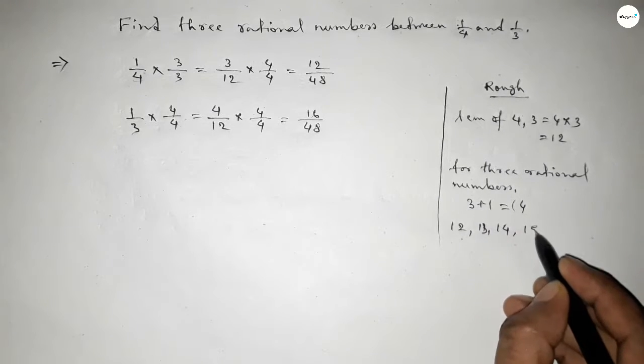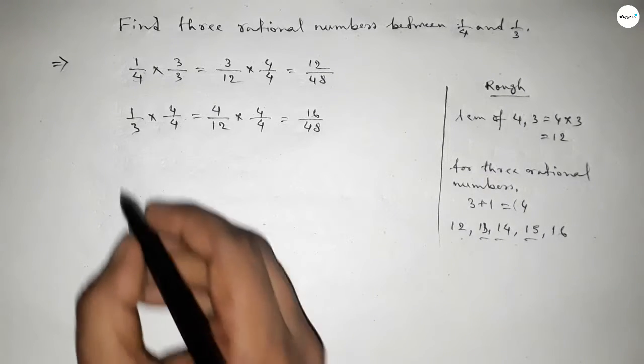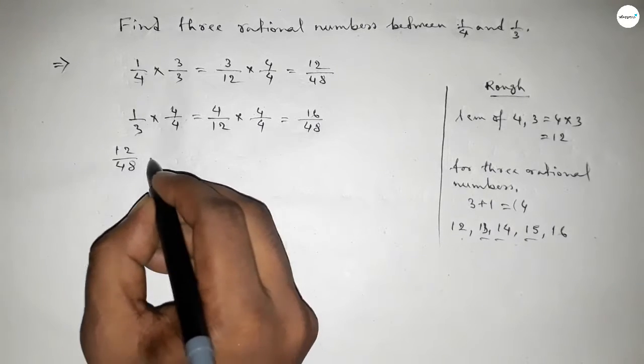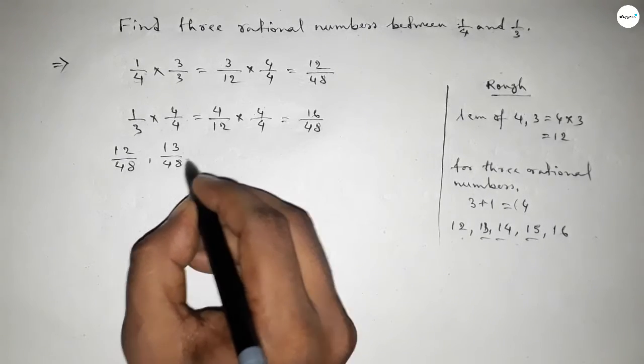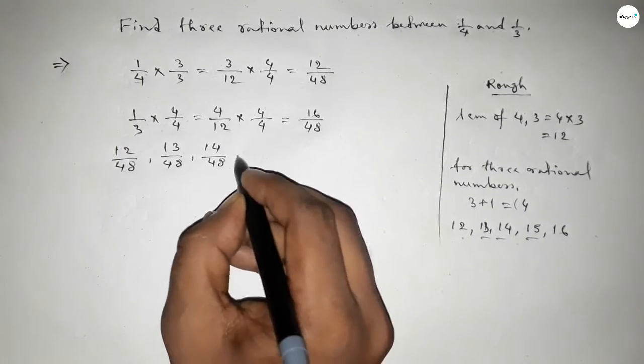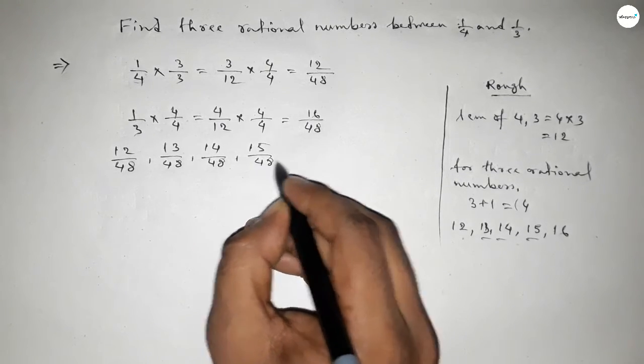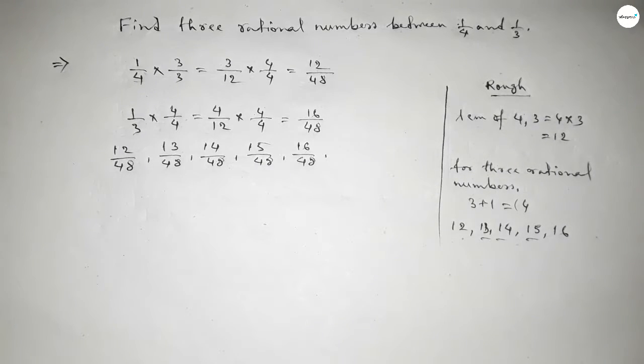Between 12 and 16 we can get three natural numbers, and by these numbers we can form rational numbers: 12 over 48, 13 over 48, 14 over 48, to 16 over 48.